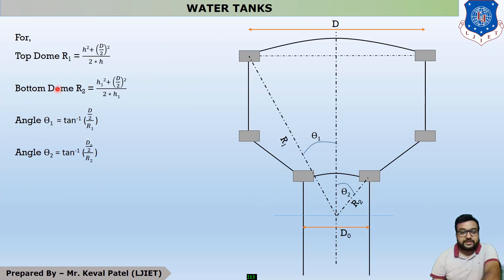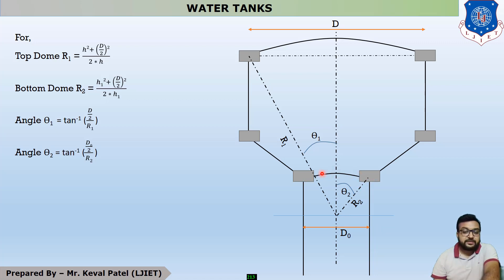Regarding the radius: the center point of the dome is located such that radius R1 is used to draw the top dome and radius R2 is used to draw and design the bottom dome. The angle that radius R1 makes with the vertical is called theta1, and the angle that radius R2 makes with the vertical at the center point is called theta2.